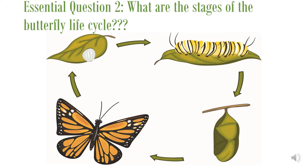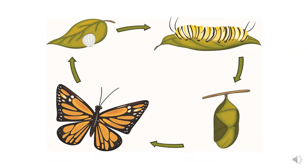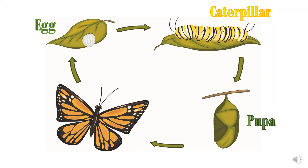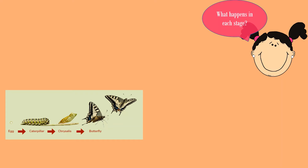What are the stages of the butterfly life cycle? The first stage is the egg, next is the caterpillar, after that is the pupa, and finally is the butterfly. So what happens during each stage?